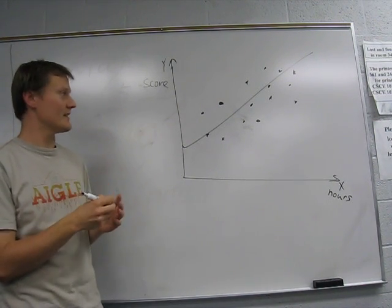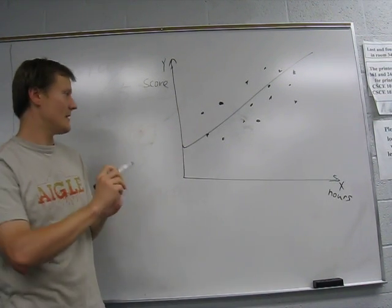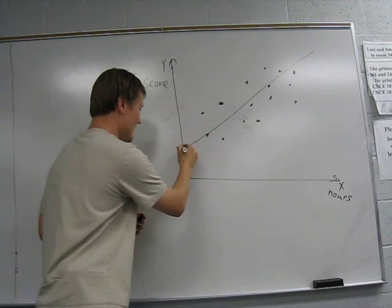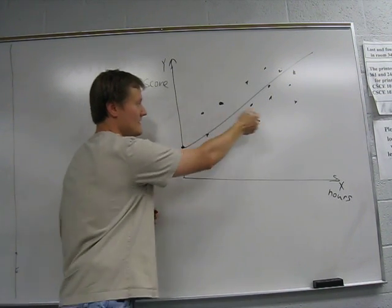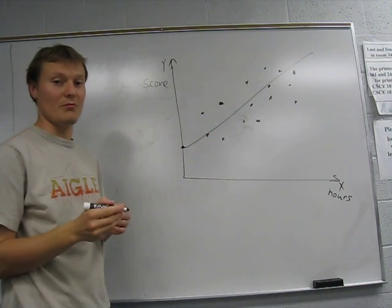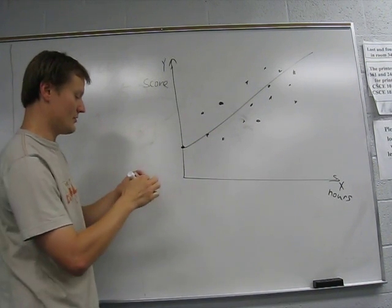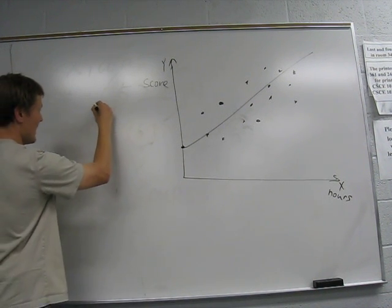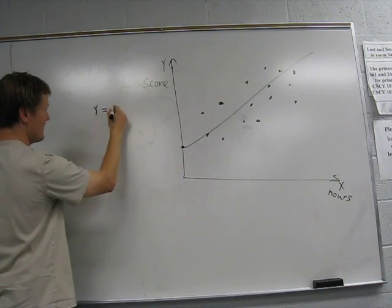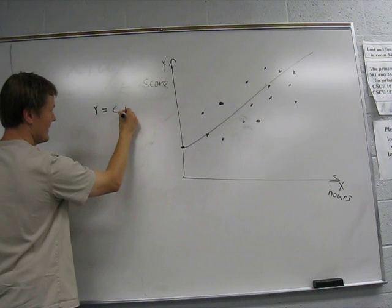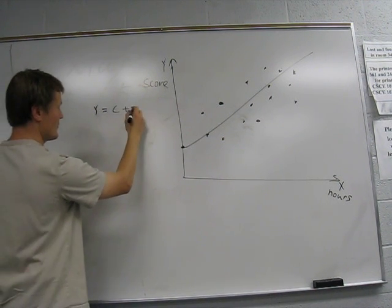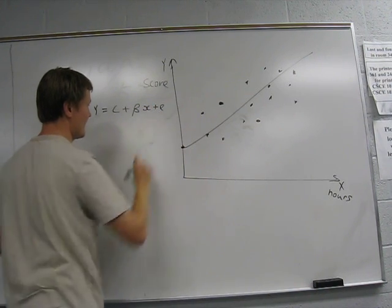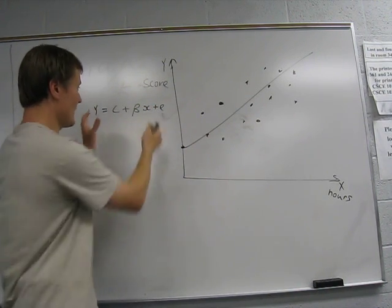So how do we get this line? So first let me say, what does this line say? This line has an intercept and this line has a slope. So we can write this line as y equals the intercept plus the slope. Okay, beta of the x plus an intercept. So this is the equation of this line.